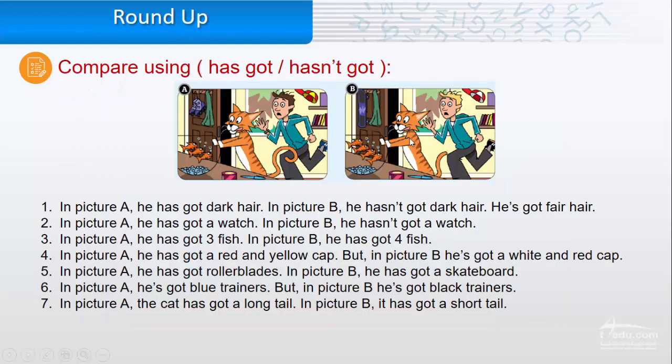Here we'll compare between two pictures, A and B. We'll use has got and hasn't got. In picture A, he has got dark hair. In picture B, he hasn't got dark hair. He's got fair hair.